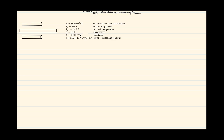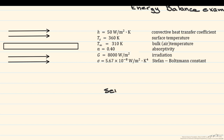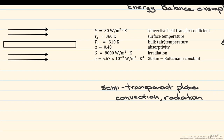Let's consider this energy balance example. We have a semi-transparent plate with convection and radiation heat transfer to and from this plate. Using the given values, we want to find J, or the radiosity.